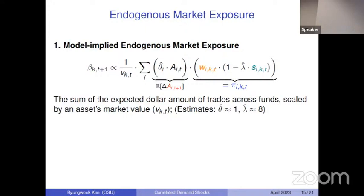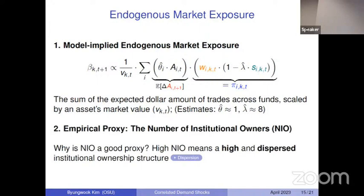I work with this model-implied exposure as well as an empirical proxy: the number of institutional owners, basically how many funds are holding a stock. This is a nice proxy because having more institutional owners means the stock is exposed to correlated demand shocks from even more funds. Importantly, higher institutional ownership also means the ownership structure is highly dispersed — each owner is small, so they are not particularly concerned about the price impact of their own trades. Whenever they adjust equity exposure over time, they will be relatively more aggressive in trading these stocks, generating a larger price impact.